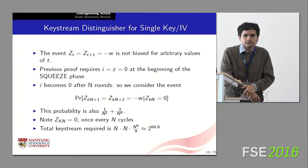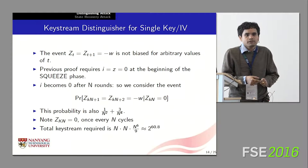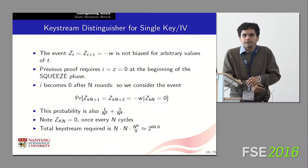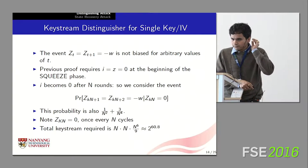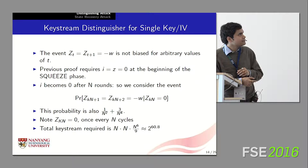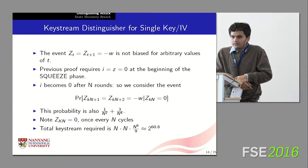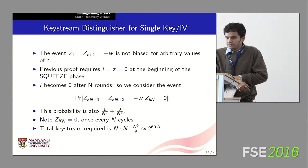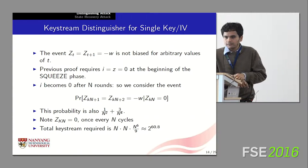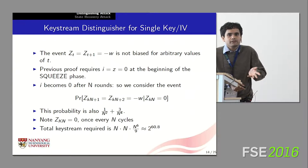We wanted to extend the previous attack into a distinguisher for the single key–IV keystream, that is, the case when the keystream is produced by a single key or a single key–IV pair. There are some practical difficulties. It turns out that the event 'Z_t and Z_{t+1} both equal −W' is not biased for an arbitrary value of t. Analyzing the previous proof, we need I and Z both to be zero at the start of the squeeze phase, and although this holds initially, it might not hold for any arbitrary t.